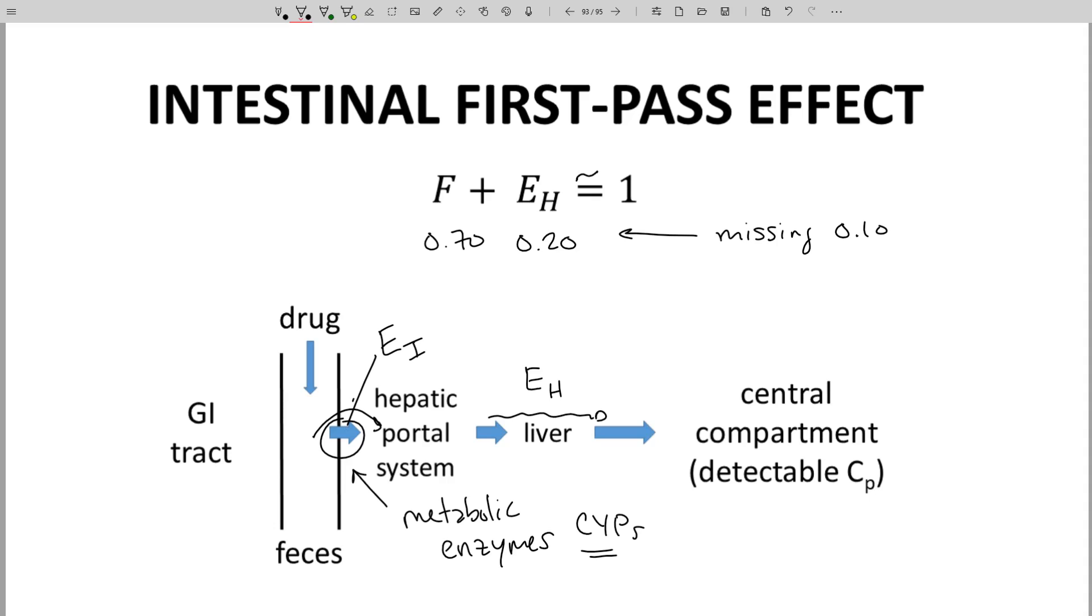Both the intestines and liver play a role in the first-pass effect. Individually, we can refer to the intestinal first-pass effect and the hepatic first-pass effect.